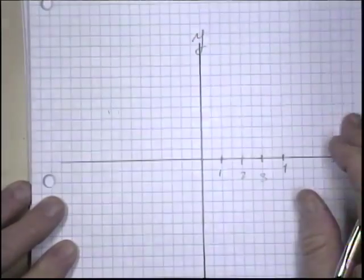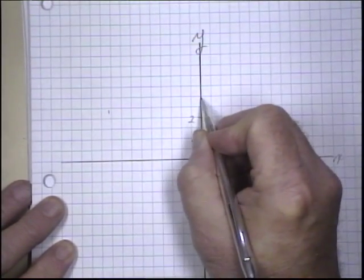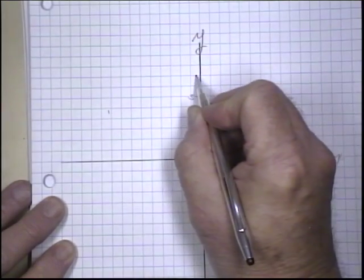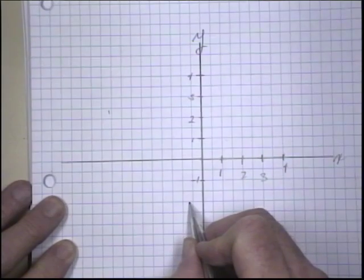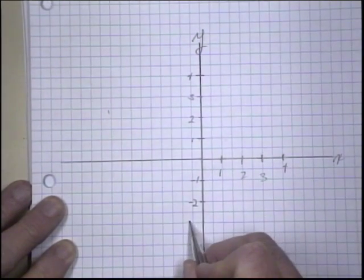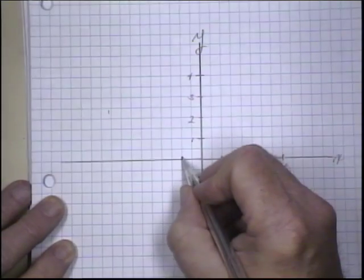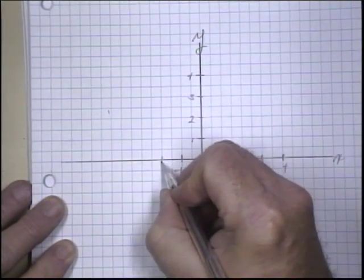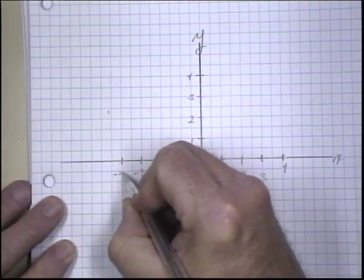This is our Y. This is going to be 1, 2, 3, 4, minus 1, minus 2, minus 3, minus 4, and a minus 1, minus 2, minus 3, and minus 4.